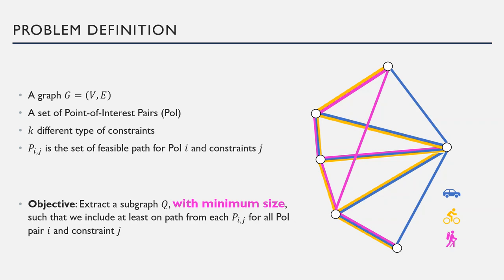We let PIJ denote the set of feasible paths for point of interest pair I and constraint J. The objective is that we want to extract a smaller graph, a subgraph Q, with minimum size such that we include at least one path from each PIJ for all point of interest pair I and constraint J.